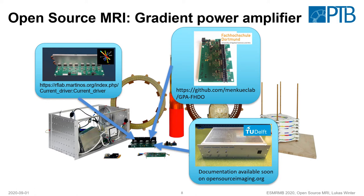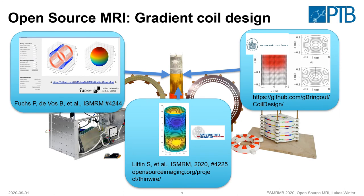Then we have some gradient power amplifiers. We have the current driver board from the MGH MIT group on the left, a similar board with four channels and 10 amps by the University of Applied Science in Dortmund, and a slightly more powerful gradient amplifier with 30 amps by the Technical University of Delft. We also have software tools that can calculate the wiring paths so that gradient coils can be built — one from the group in Leiden/Delft, one from Freiburg, and one from Lübeck.